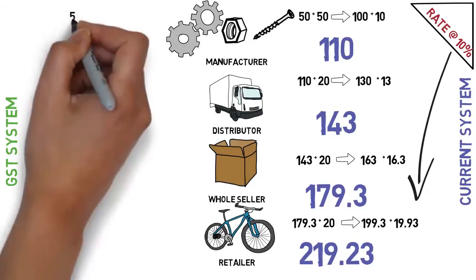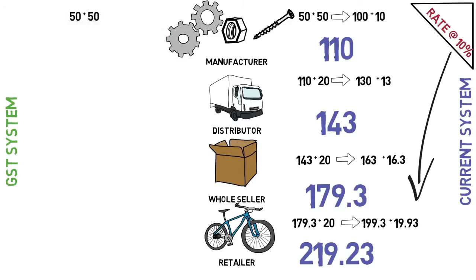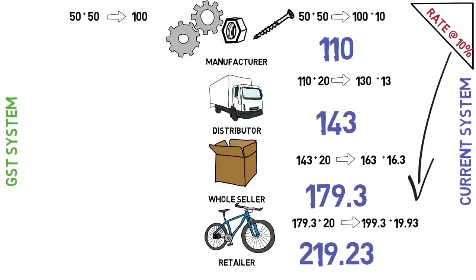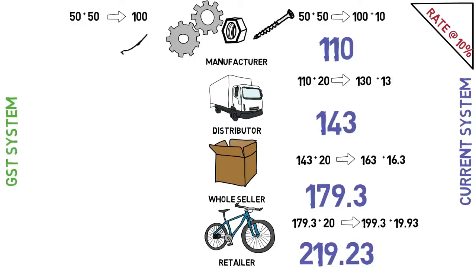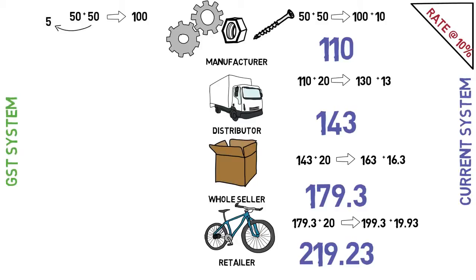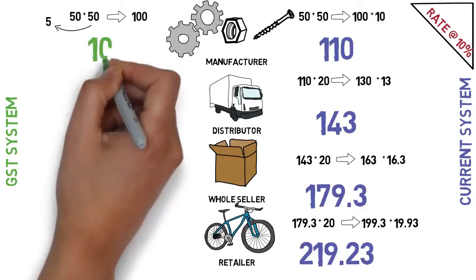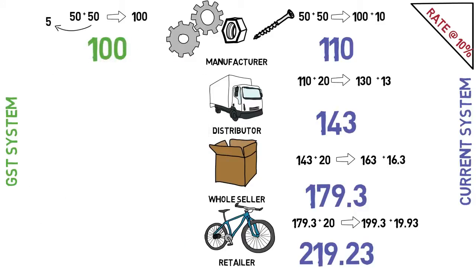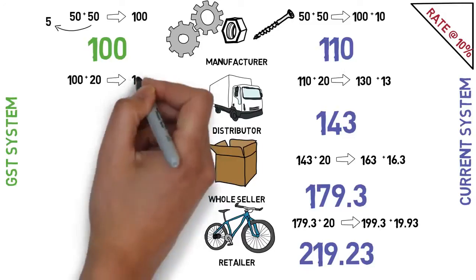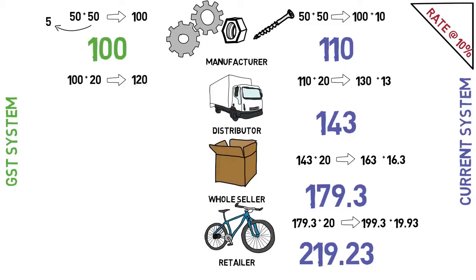Now we will take the same example under the GST system. Raw material of 50 rupees and manufacturing value of rupees 50 make the product worth 100 rupees. But this time the manufacturer pays taxes only on the value added by him, which is rupees 50 — so he pays 10 percent of 50, which is 5 rupees as tax. The selling price does not increase, and the cost of the product for the distributor is 100 rupees only. The distributor adds 20 rupees profit, making the product 120 rupees.